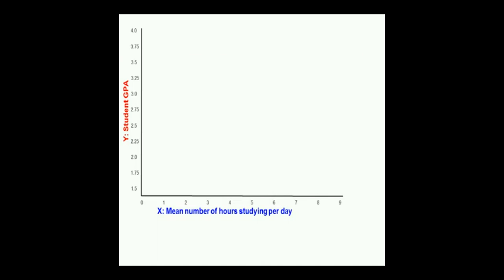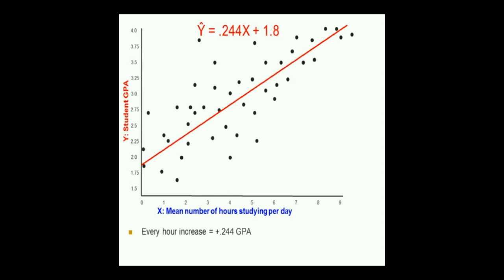If x is the mean number of hours that a student reports that they study per day in college, and y is their GPA, then we might get data like this, which I totally made up and isn't real. The best-fitting line might be right through there, and that would be our regression line. Y hat equals 0.244x plus 1.8. What's b? It's 0.244. So, every hour increase in studying, we would predict 0.244 increase in their GPA. The y-intercept is 1.8, so we predict a GPA of 1.8 for a person who doesn't study at all.